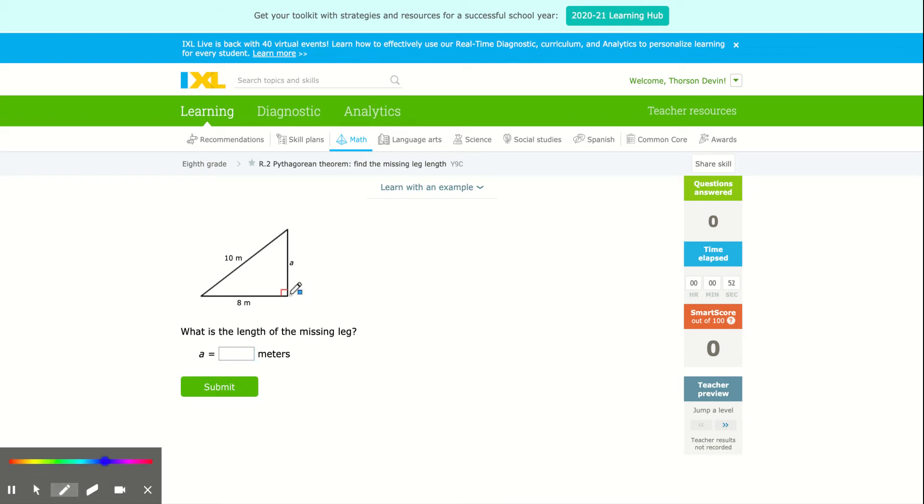So as a quick reminder, remember, a right triangle always has a little square in one corner. That square is formed by two sides that are called the legs. And that's supposed to be a G. And this is a leg.